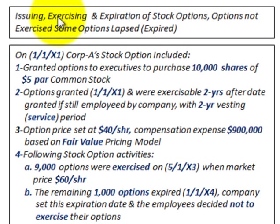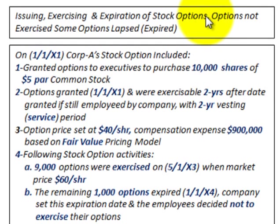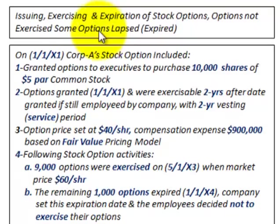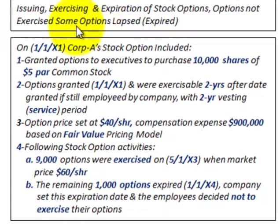We're going to be going over issuing, exercising, and the expiration of some stock options. The expiration is where the options are not exercised — some of the options actually lapse or expired.